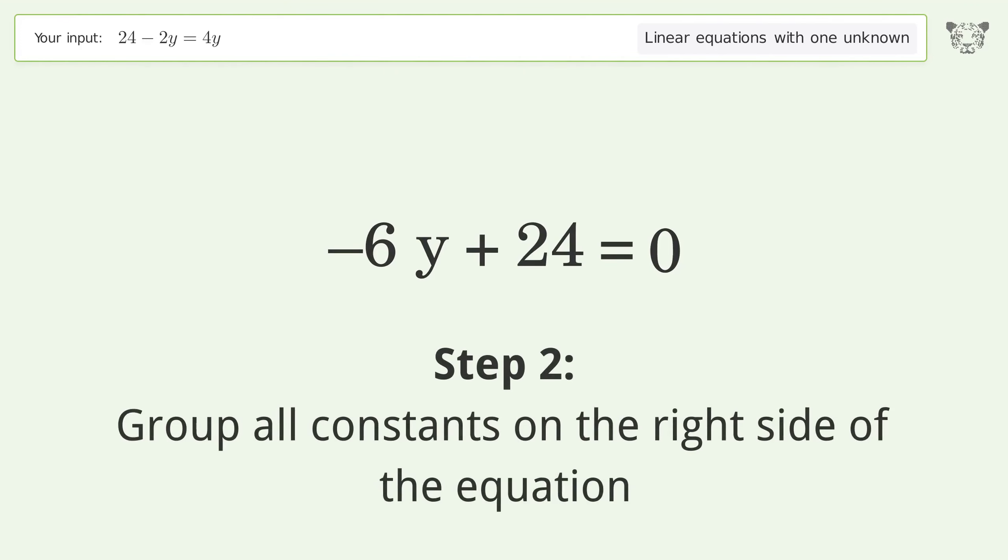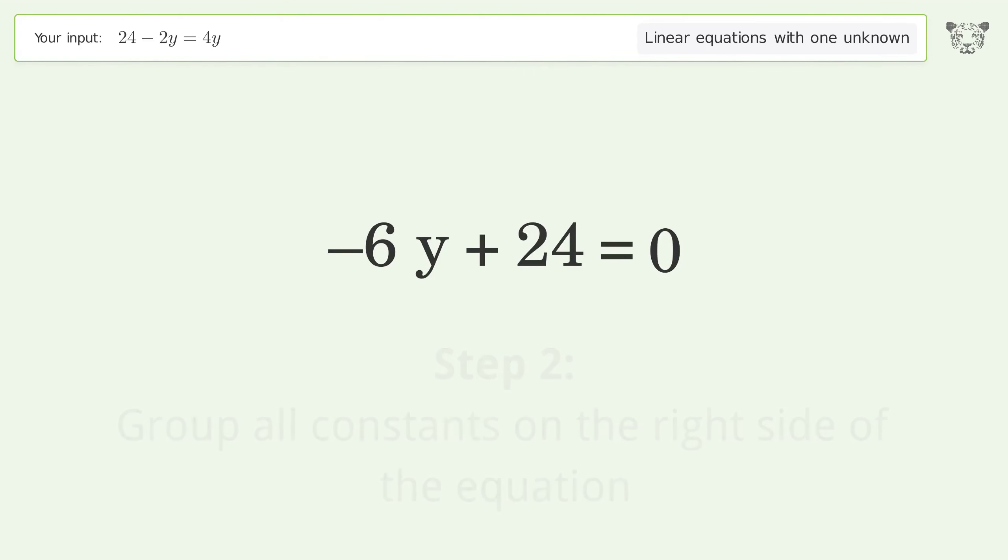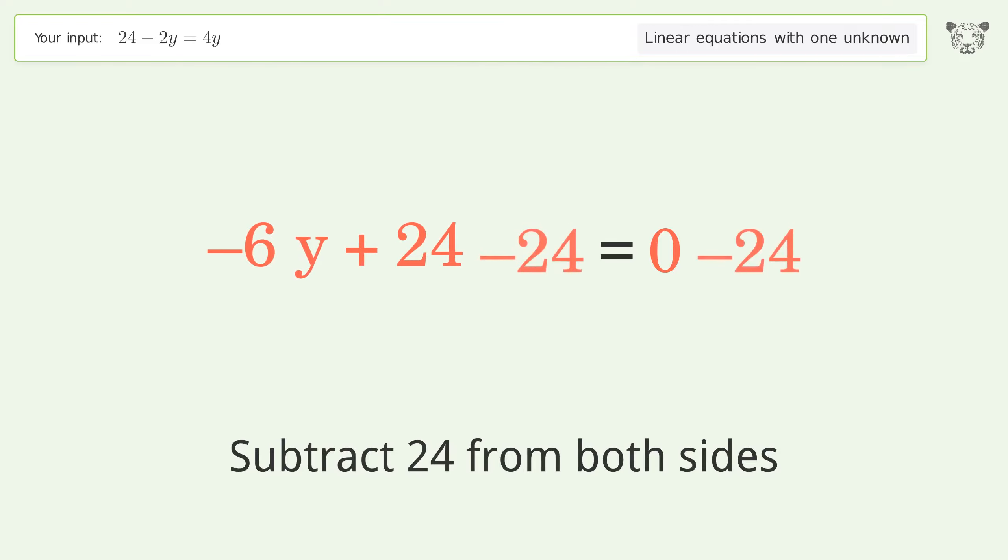Group all constants on the right side of the equation. Subtract 24 from both sides. Simplify the arithmetic.